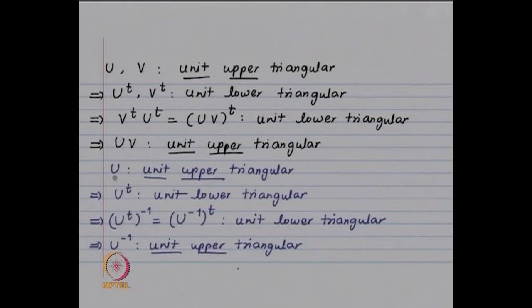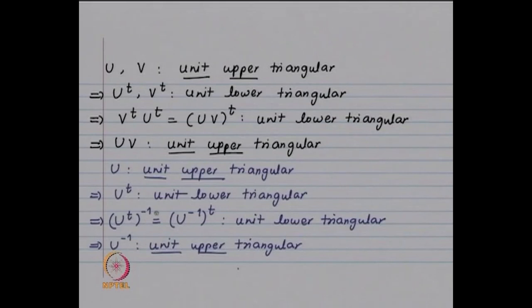For the inverse: u is unit upper triangular; take its transpose, which becomes unit lower triangular; take its inverse, which is also unit lower triangular (as we just proved). Since transpose and inverse commute — (A⁻¹)ᵀ = (Aᵀ)⁻¹ — this gives uᵀ inverse equals u⁻¹ transposed. If u⁻¹ transposed is unit lower triangular, then u⁻¹ must be unit upper triangular.